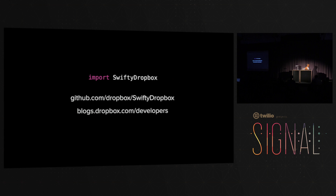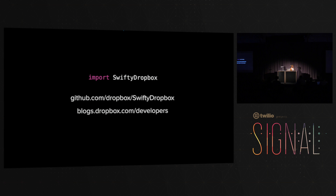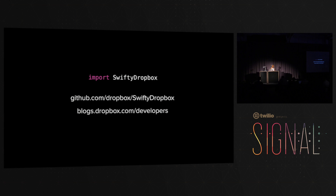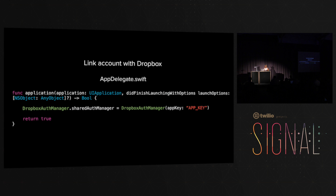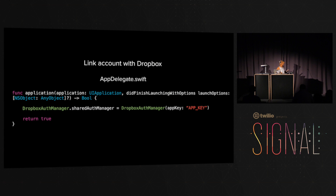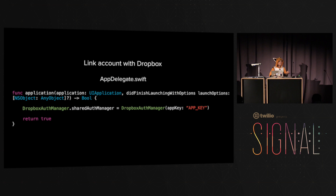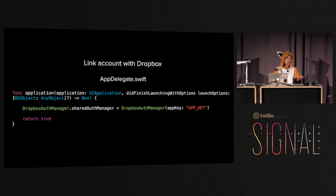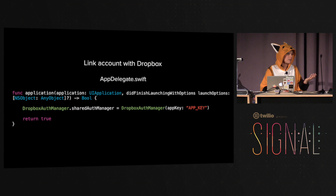To get started with the Swift Dropbox SDK, you just need to import it. We have instructions for how to install it using CocoaPods on our blog, and there's the GitHub URL for the project. Once it's installed, the first thing to do is register your app with the SDK. You'll go to the Dropbox Developer Console, sign up, fill in some information, and get back an app key. You use that app key to register with the Dropbox Auth Manager — I'm doing that in my app delegate in didFinishLaunchingWithOptions.